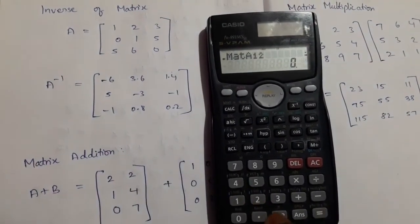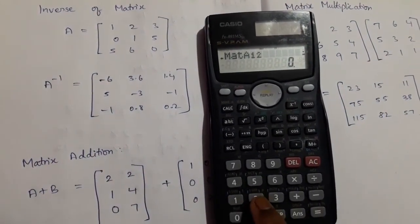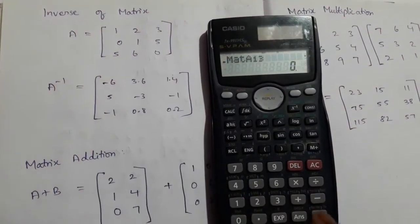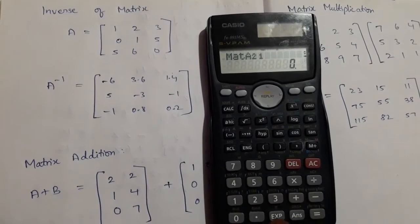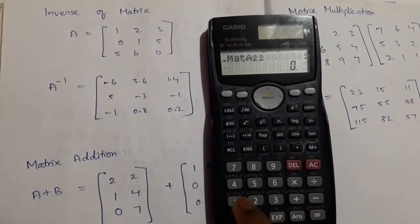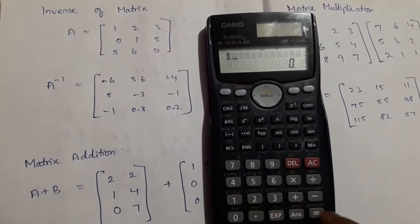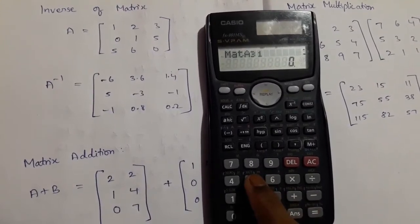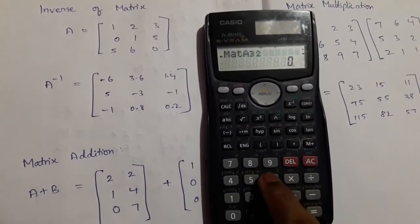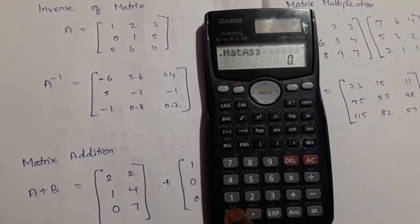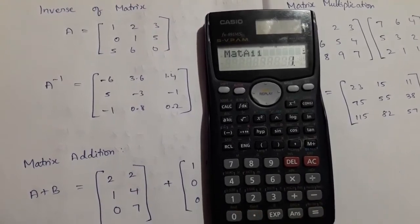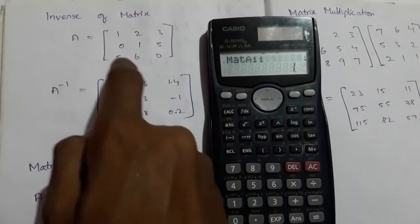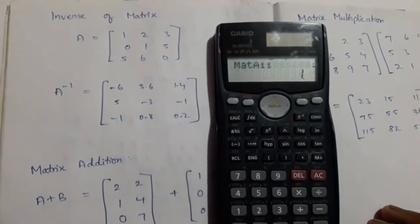Input the elements: 1, 2, 1, 3, 0, 1, 5, 5, 6, 0. Now the matrix is filled with these numbers or elements.